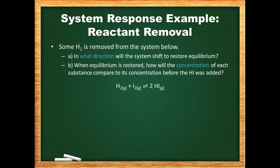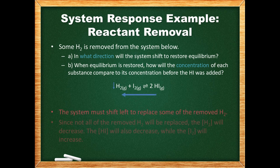Here, we are dealing with the same reaction, but this time some hydrogen has been removed. The system must shift left to replace some of the removed hydrogen. Since not all of the removed hydrogen will be replaced, the concentration of hydrogen will decrease. The concentration of hydrogen iodide will also decrease as we have shifted left. A shift towards reactants increases the concentration of iodine.